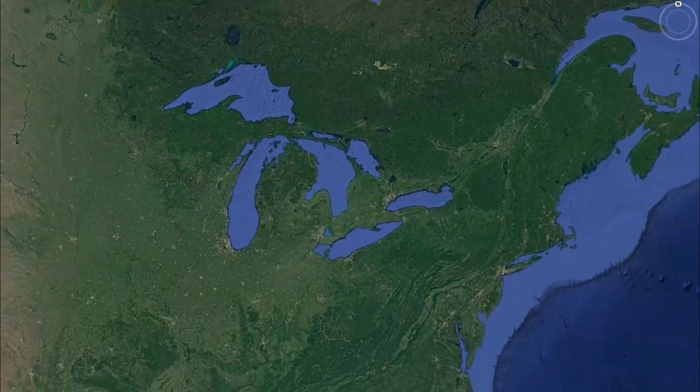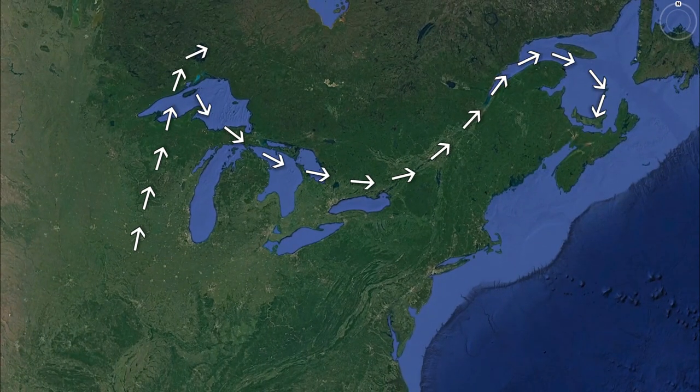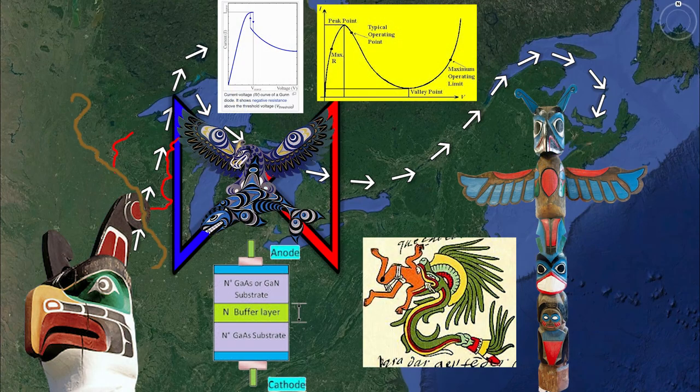The St. Croix River represents an electrical boundary for the diode. The gun diode.